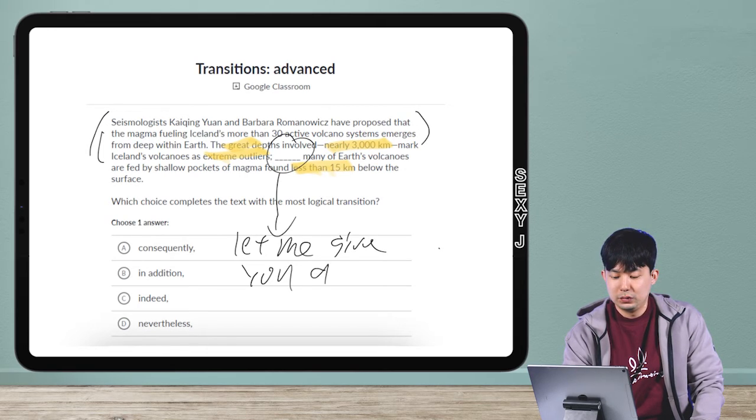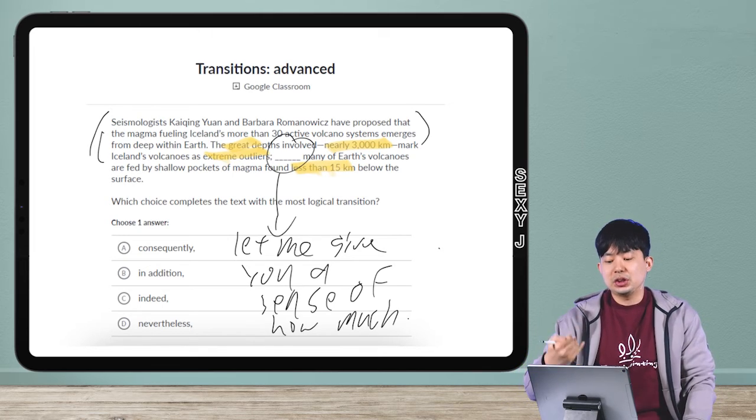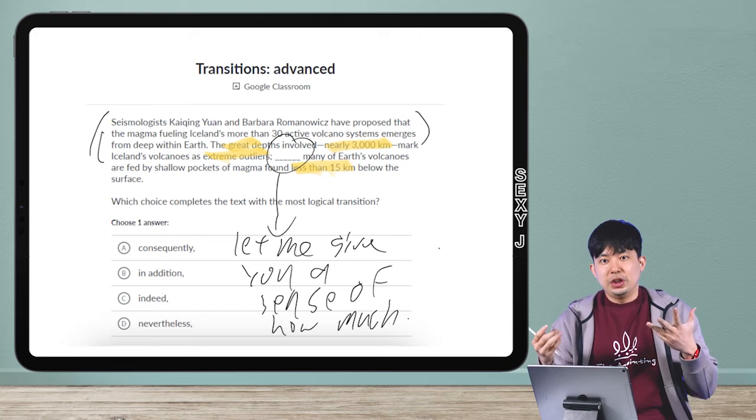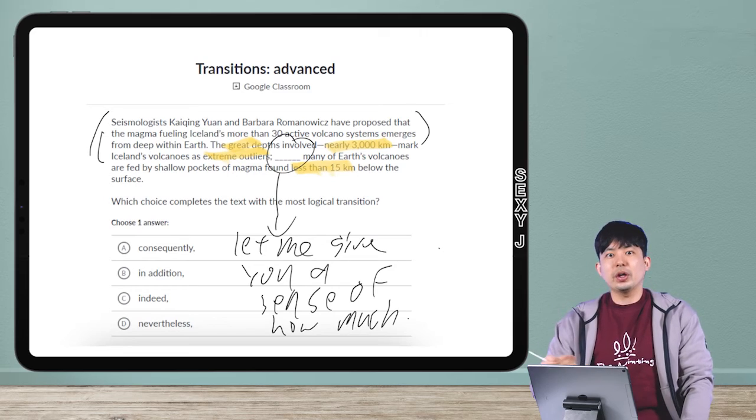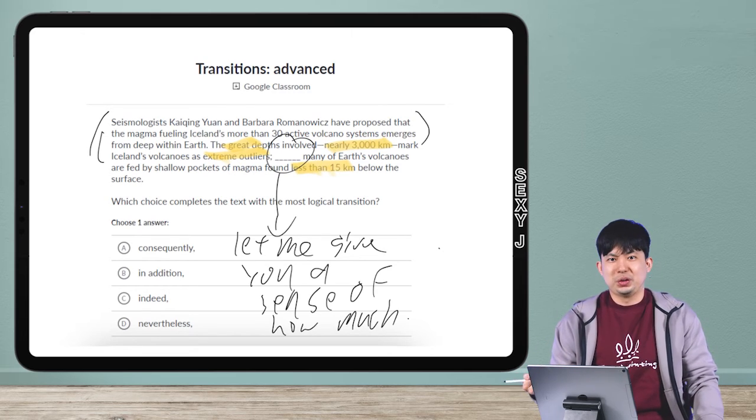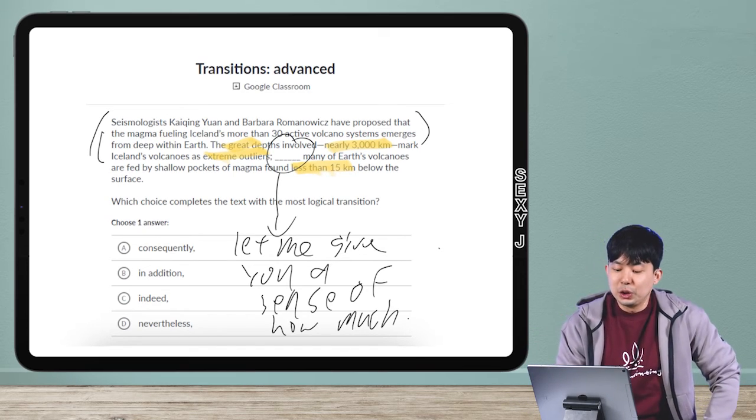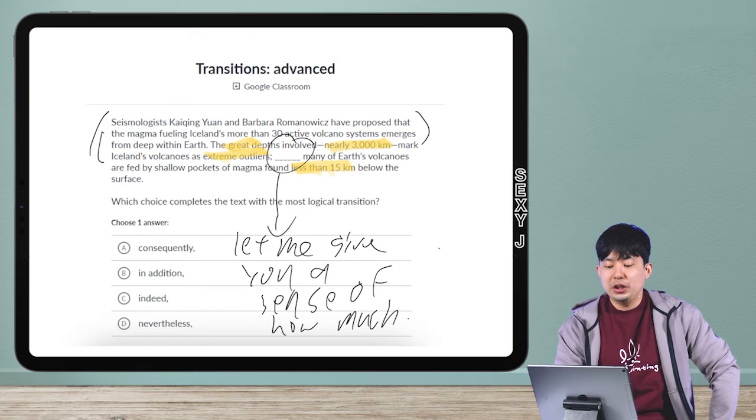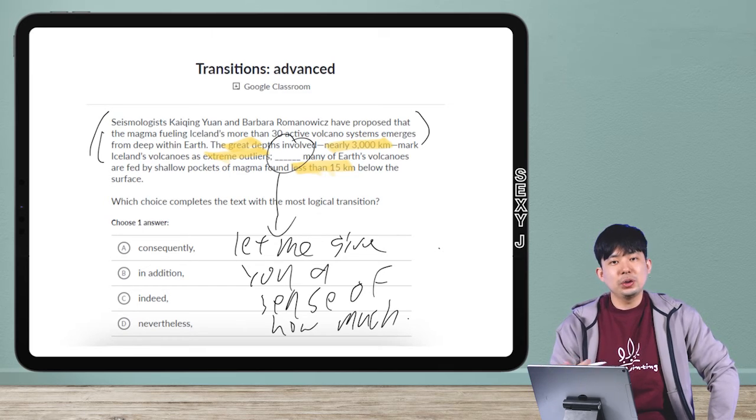So what kind of word should go here? Let me give you a sense of how much. Obviously, you guys are not going to be writing that whole sentence when you're doing the test, but you can be very free in your paraphrase in your head. You don't have to be like I'm going to come up with this very perfect transition word. Here, what's the idea? We have, oh, it's 3,000, that's an outlier. Here is a sense of how much of an outlier that is. I am giving you a further clarification and explanation.